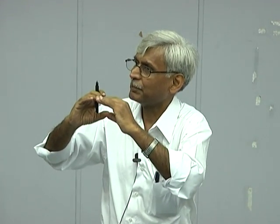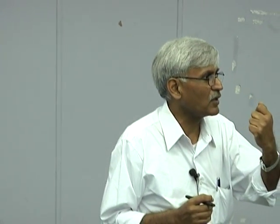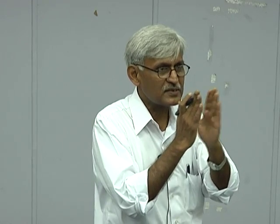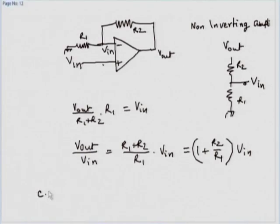Similarly, consider a capacitive mic. Suppose you have some charge placed on a mic. If I speak in front of it, the two plates vibrate, the capacitance changes, but the total charge remains the same. Therefore the corresponding voltage must change because the capacitance is changing. As long as I do not take away this charge, the condenser microphone works. Therefore, I need a configuration that draws no current from the input, and this non-inverting configuration is the appropriate one.